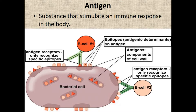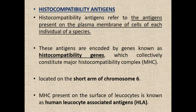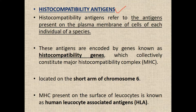Antigen — what is antigen? A substance that can stimulate immune response in the body. Histocompatibility antigens are the most important for viva as well as short notes. Histocompatibility antigen refers to the antigen present on the plasma membrane of cells of each individual of a species.